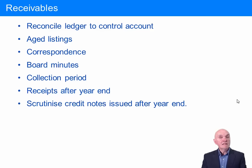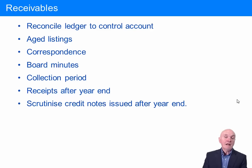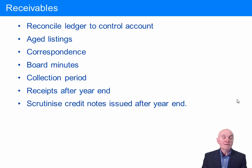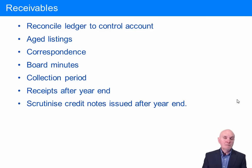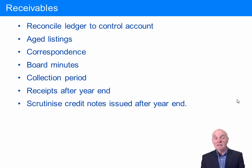Receipts after year-end is a fantastic test if you can wait. If there is £20,000 outstanding at year-end from a customer you're worried about and on the 20th of January that customer pays you £20,000, you know it was right to value it at £20,000 at year-end — it's proven to be a good debt and won't need to be written down. Sometimes people delay signing the audit report, waiting on a really major customer paying. They wait to the end of January or the end of February, trying to get more evidence that the debt is actually going to be honoured.